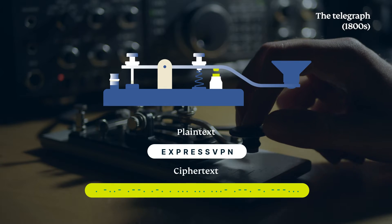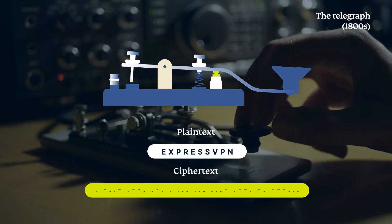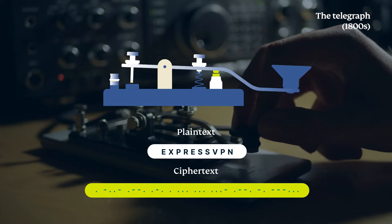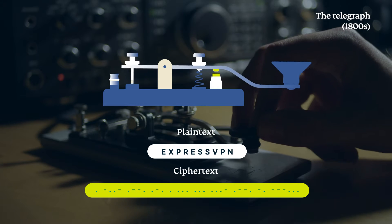The telegraph's rise in the 19th century led to privacy concerns, prompting governments and telegraph companies to use ciphers and codes to counter interception.